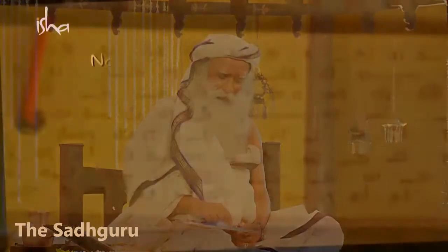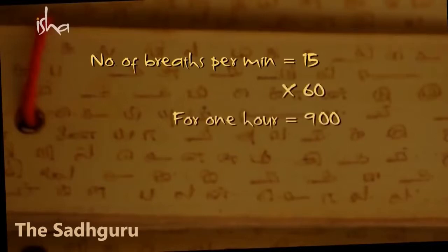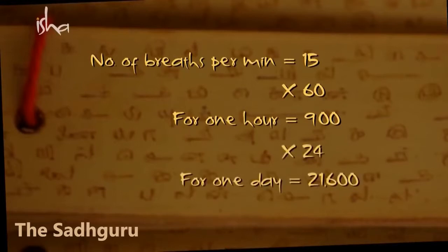If you take the number of breaths you're taking per minute — if you're not in a state of heavy excitement, you're doing 15. If you are in a state of sadhana and have done lots of sadhana, you could be at 12; otherwise you will be at 15. So 15 breaths per minute, times 60 per hour, times 24 — that is 21,600.